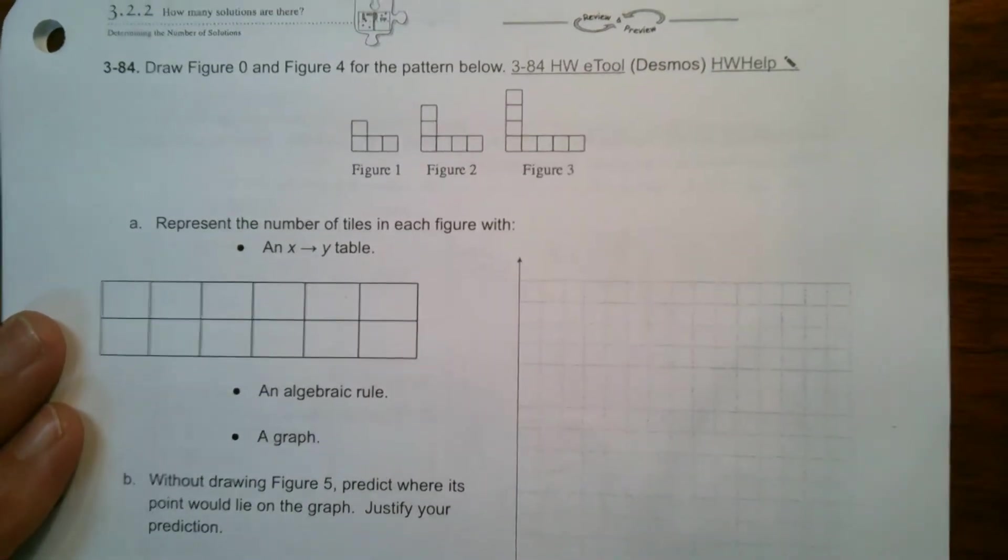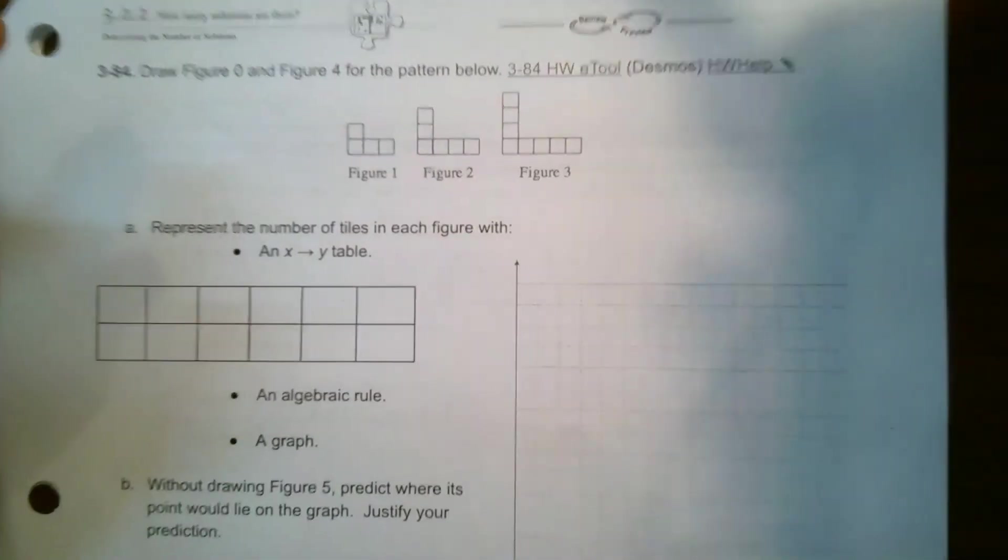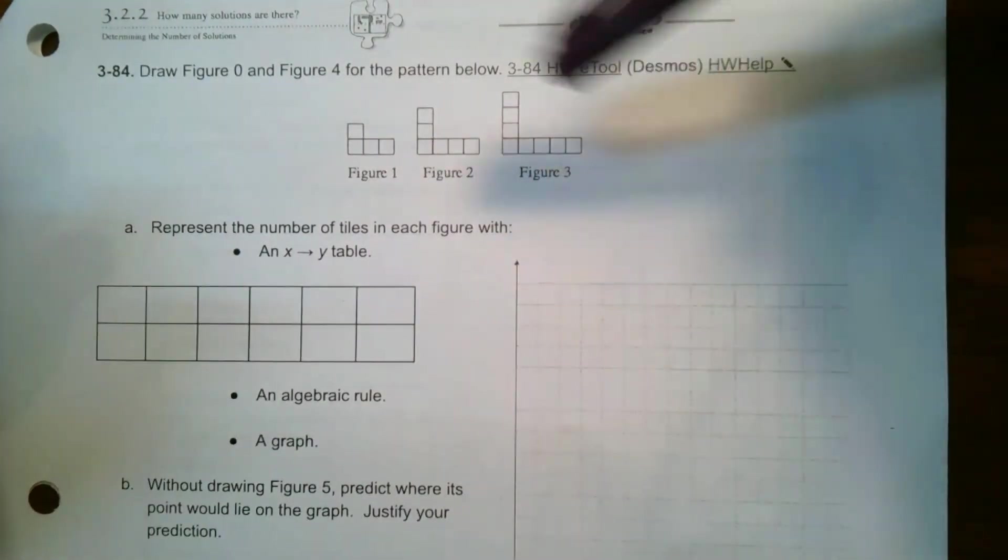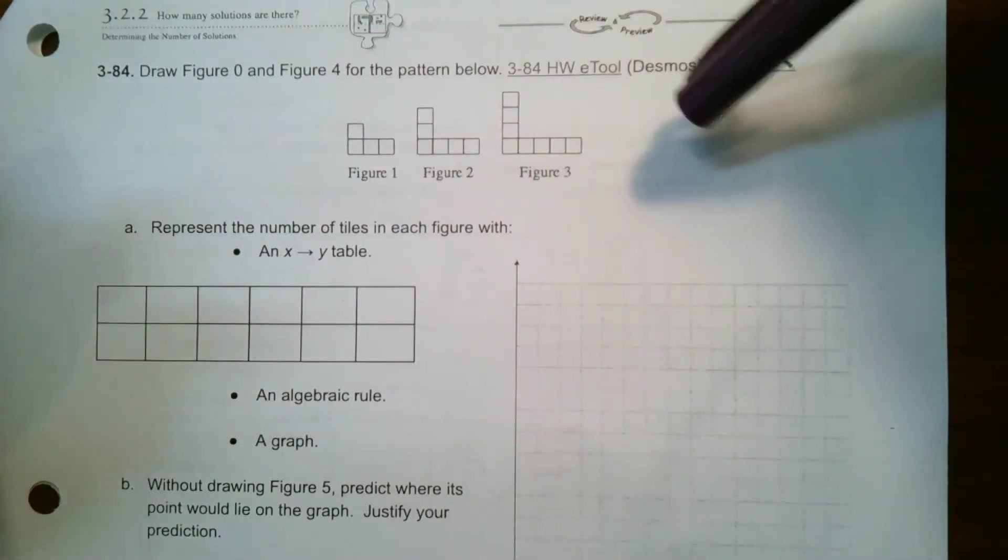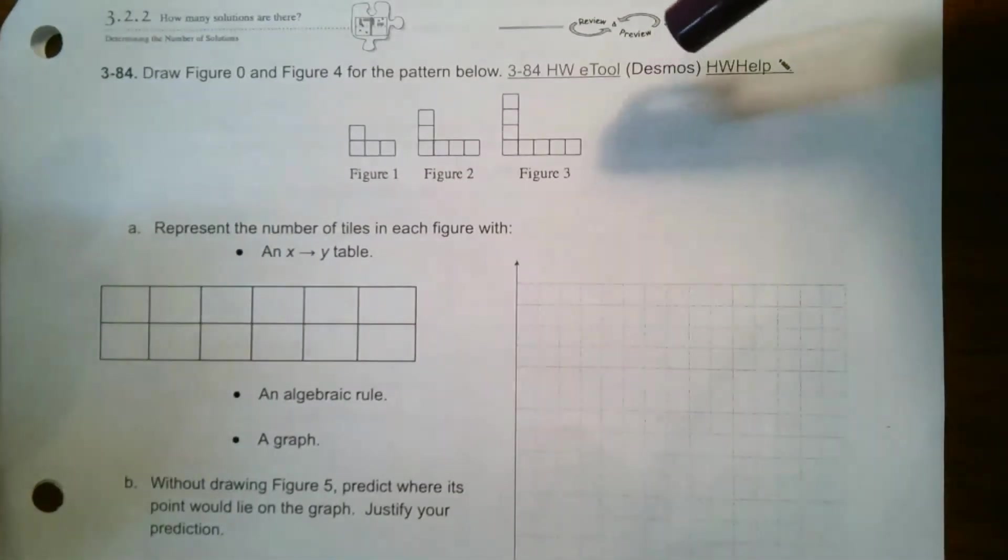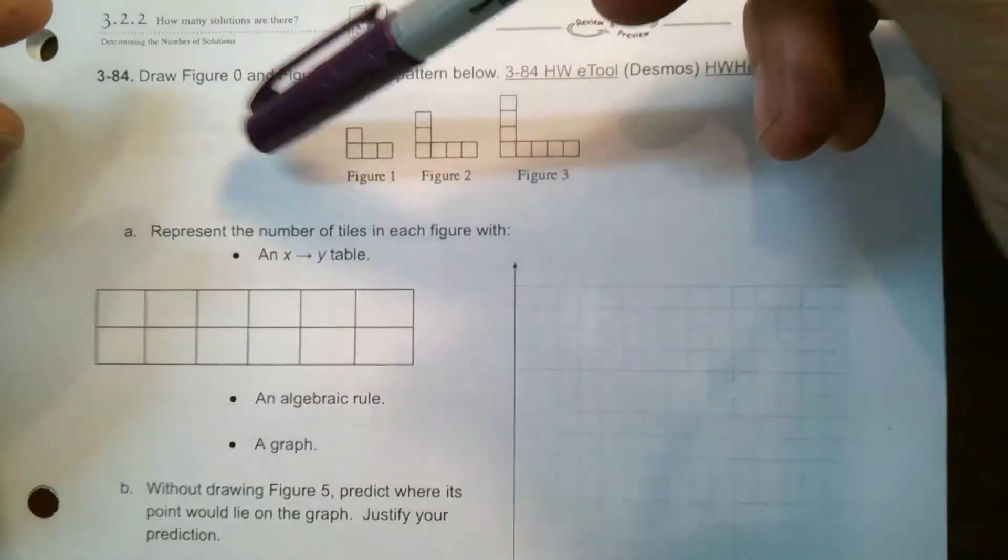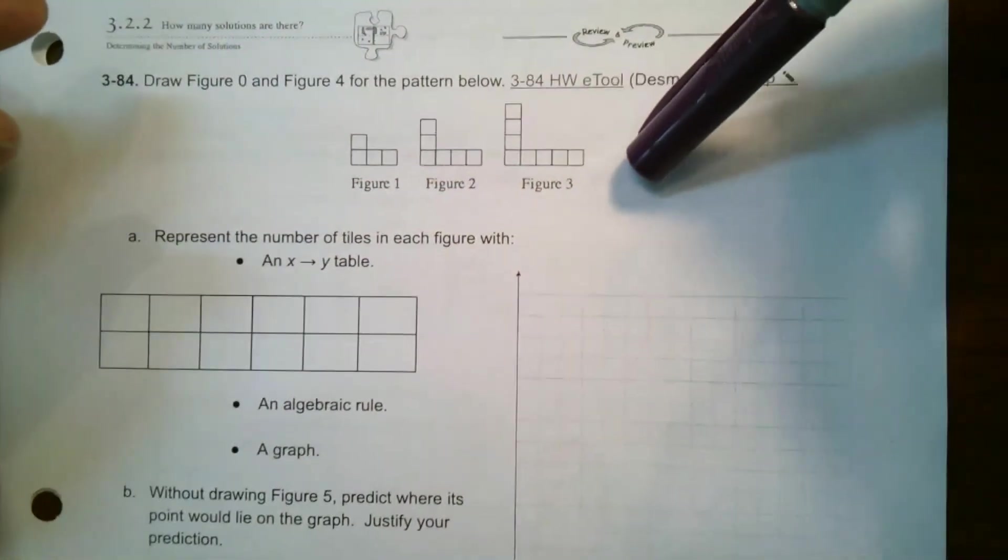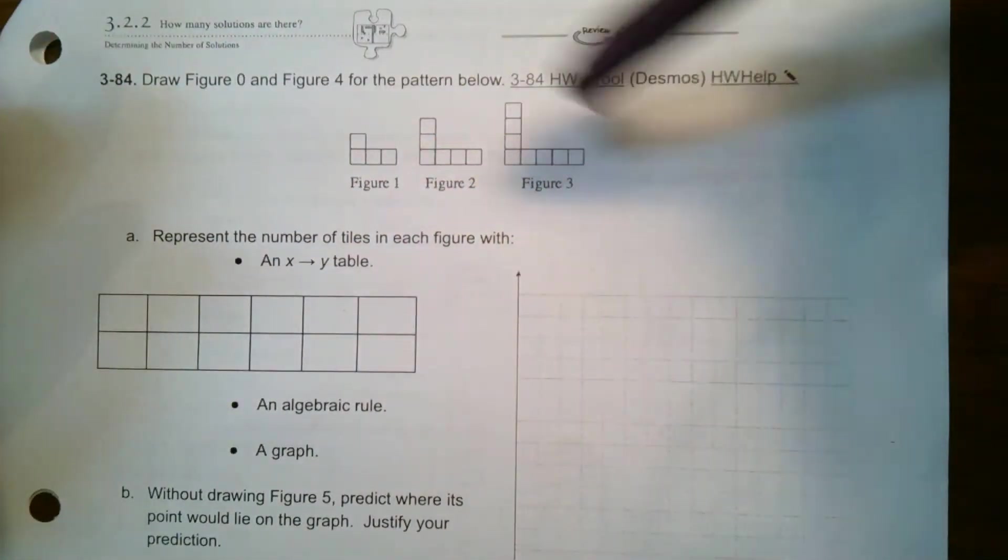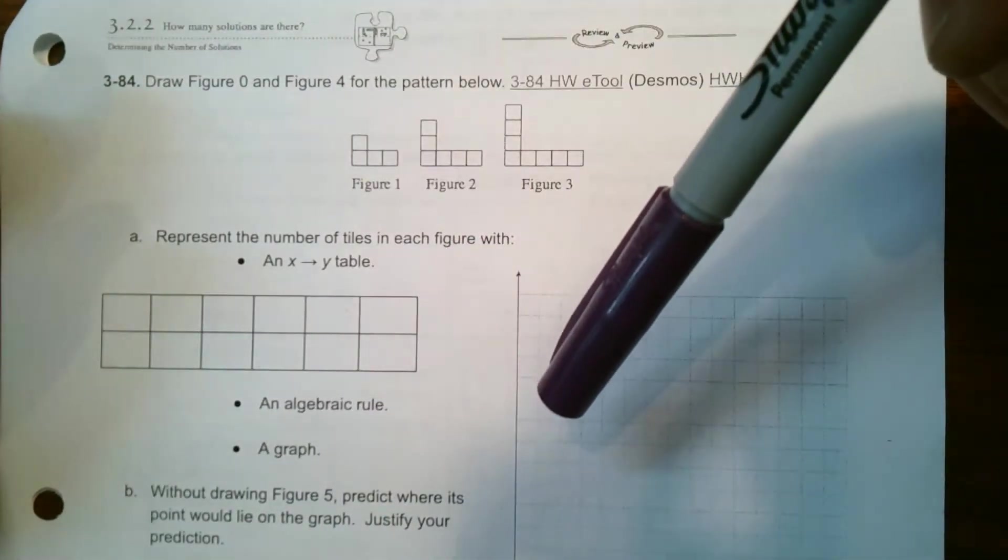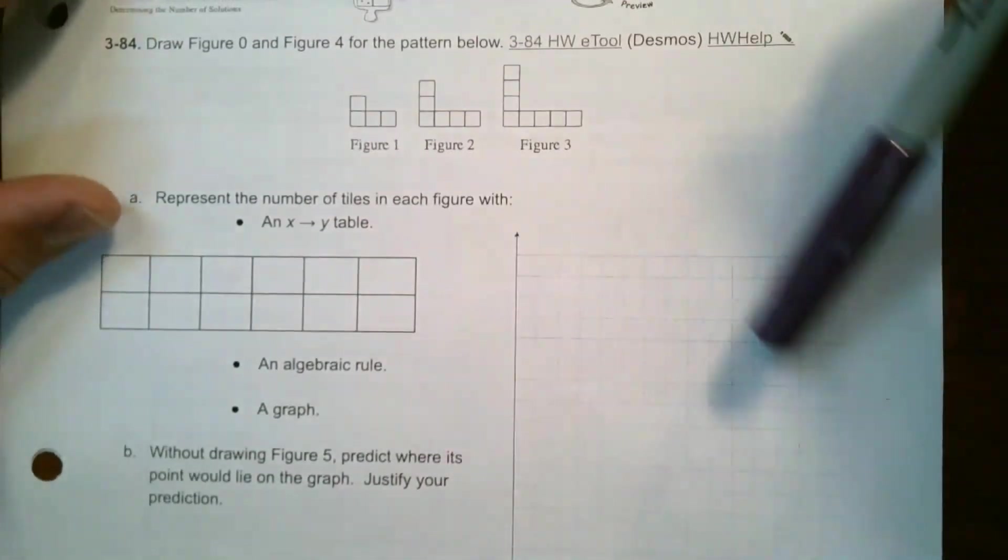Hey folks, Mr. Dell here. I am looking at working with a pattern of tiles, a tile pattern. With that tile pattern, determining what the figure before zero, and fourth figure, the figure after, what they would look like. Creating a table of values, writing the algebraic rule, and then as well graphing that rule.